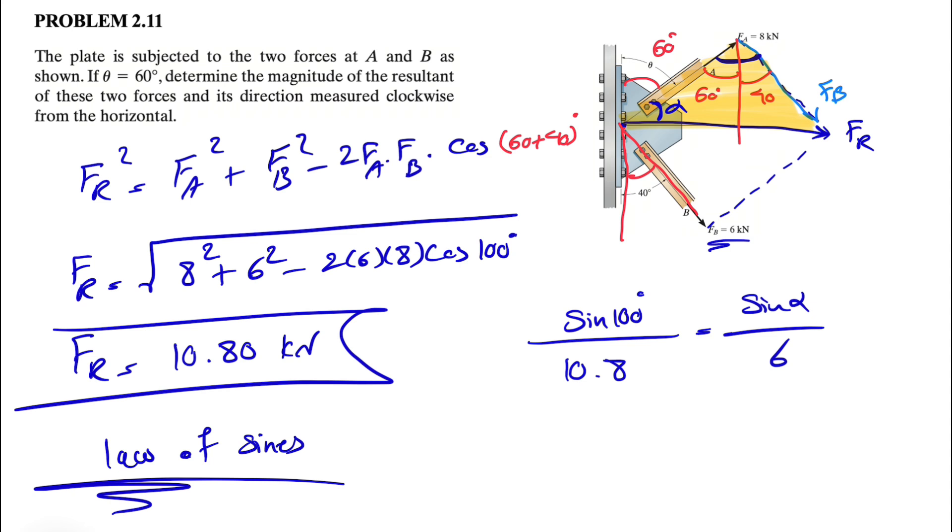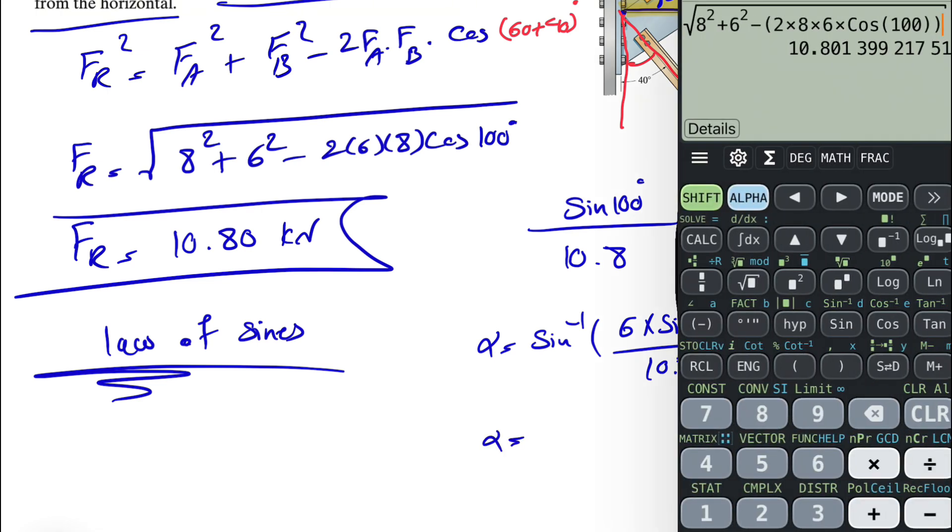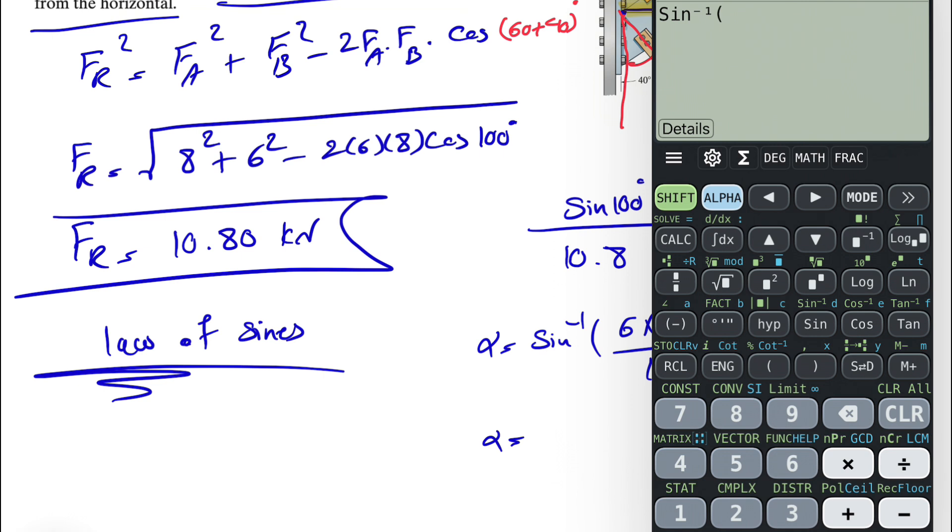And see if it's above the horizontal or below the horizontal. And after that, we can find its direction measured clockwise from the horizontal. So here, if we want to find alpha, so alpha would be basically sine inverse of 6 times sine of 100 degrees over 10.8. And let's see what we get for this. So our alpha would be 33.17 degrees.